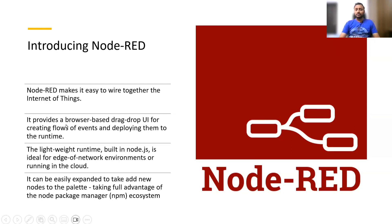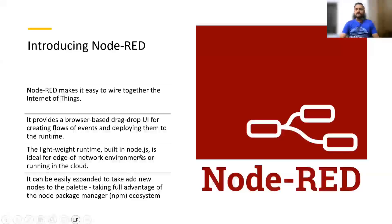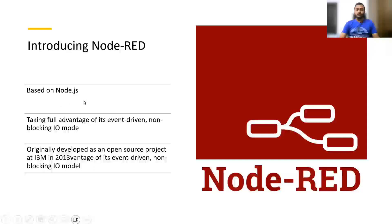Node-RED is actually a browser-based drag-and-drop UI for creating flows of events. If there is any triggered event and you want to perform some business use case, Node-RED would be very useful and easy to start. It is a lightweight runtime built on Node.js — that's where the name comes from. It is ideal for edge-of-network environments or it can run in the cloud. It was previously developed by IBM in 2013 to take advantage of the event-driven and non-blocking I/O model.